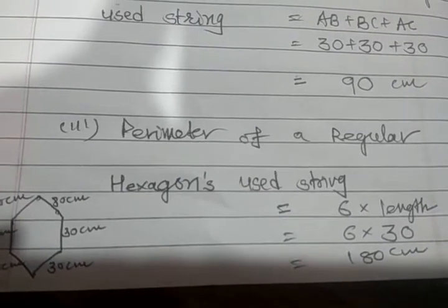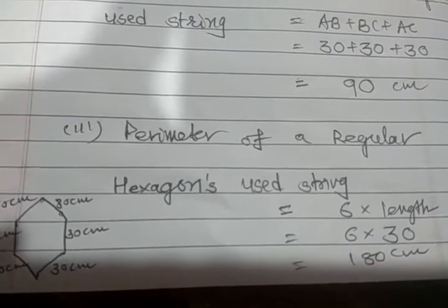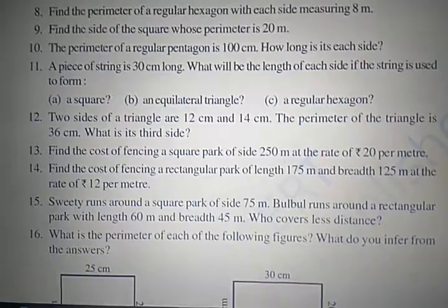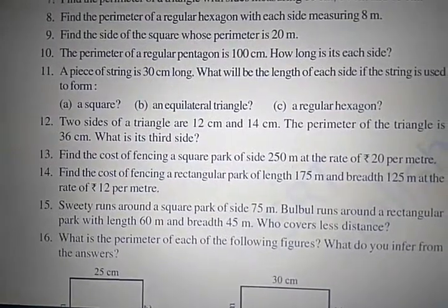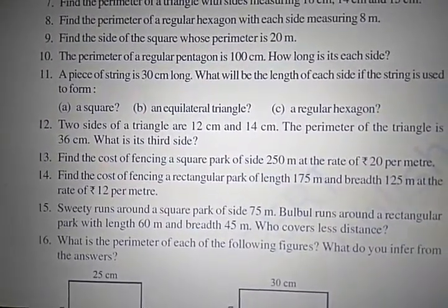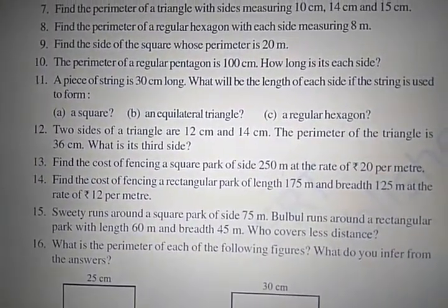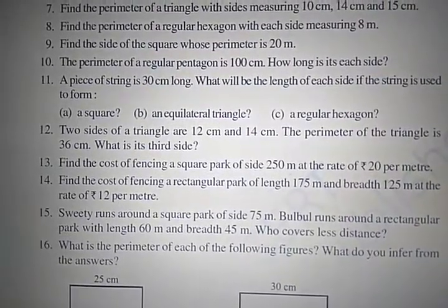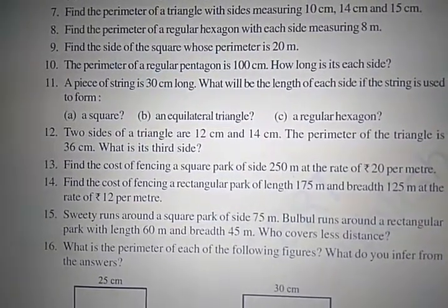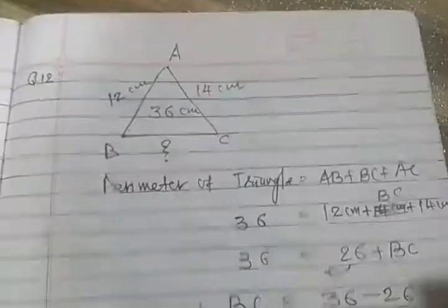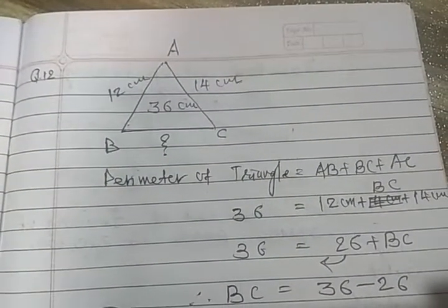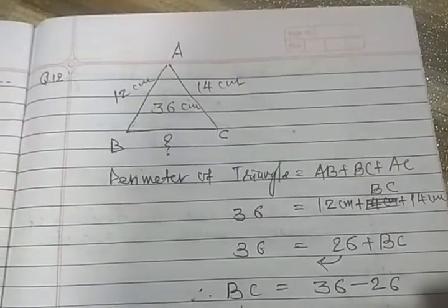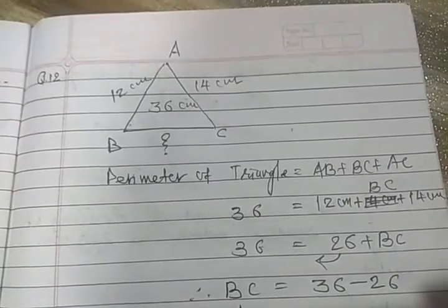6 multiplied by 30 equals 180 centimeters. Question 11 is complete. Question 12: two sides of a triangle are 12 centimeters and 14 centimeters; the perimeter of the triangle is given as 36 centimeters. What is the third side?